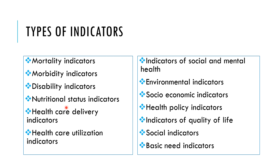As public health consultants we are concerned with both delivery and utilization indicators. We are also concerned with social and mental health indicators, since the definition of health is incomplete without the social and mental dimensions. Environmental indicators such as air, soil, water, and indoor air pollution indices matter too. Socioeconomic indicators are also relevant, as socioeconomic conditions affect health status. Other indicators include health policy indicators, quality of life indicators, social indicators, and basic needs indicators.